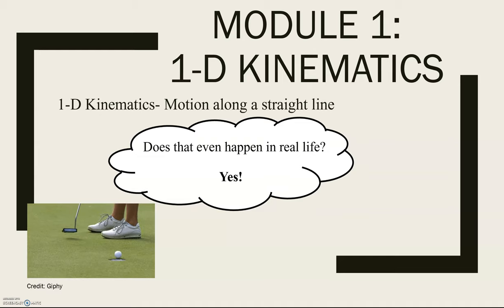So soccer, for example, if I were to pass a ball to a friend along the grass, that's one dimensional motion. If I am playing American football, if I'm running the football down the field, that's going to be one dimensional motion and can be described using one dimensional kinematics.